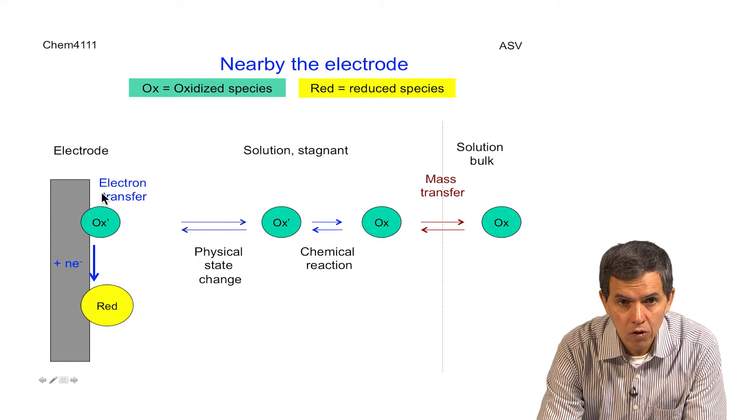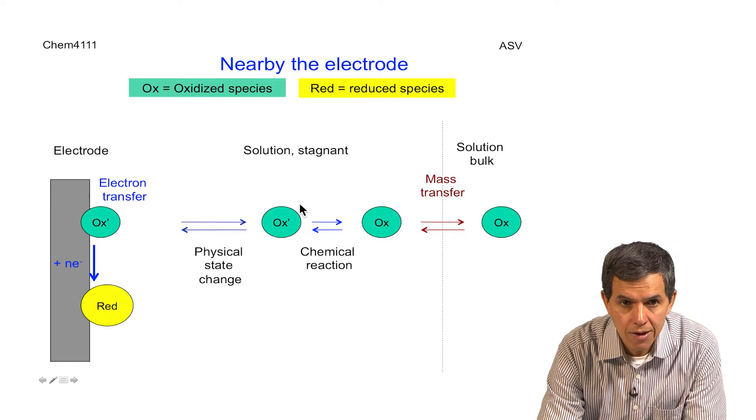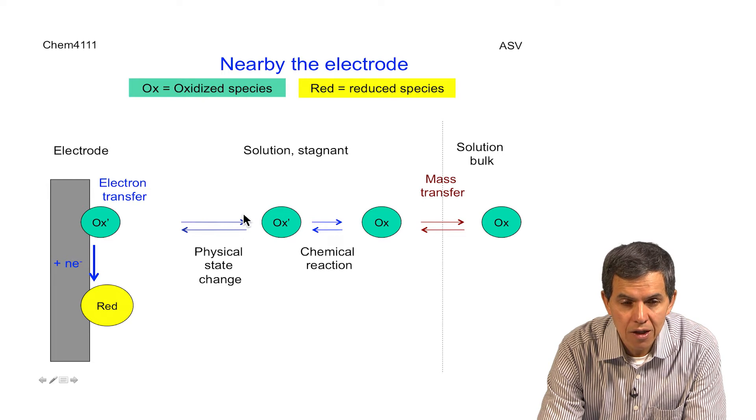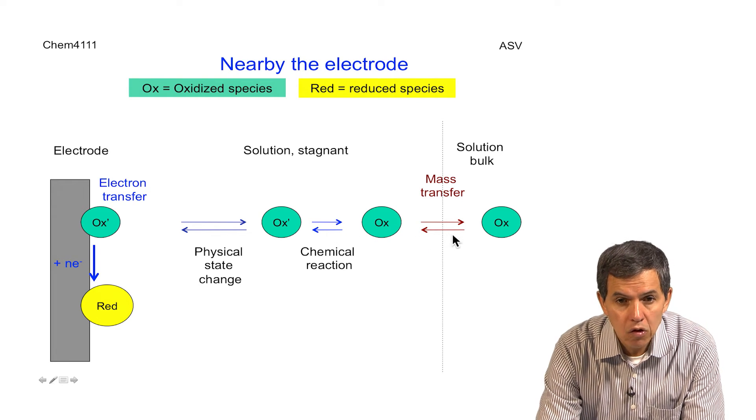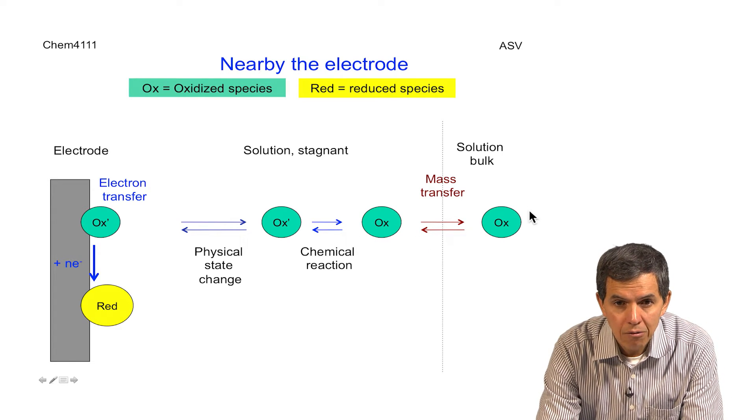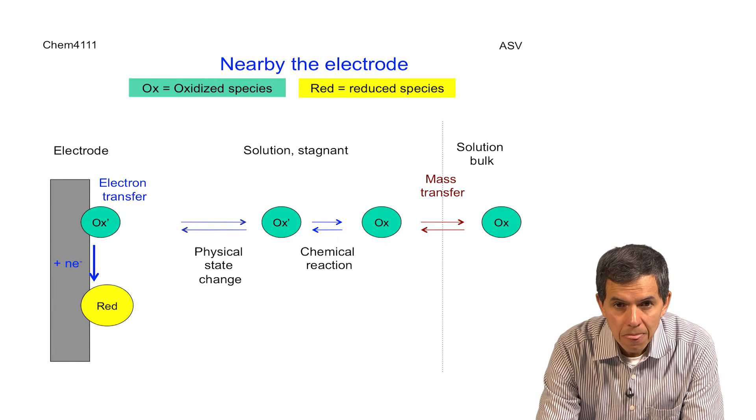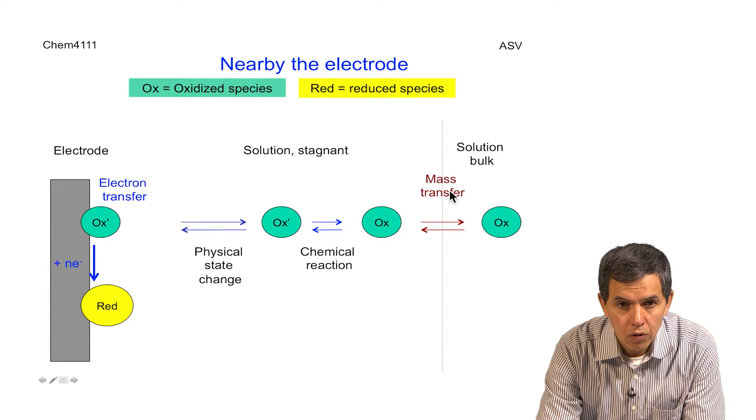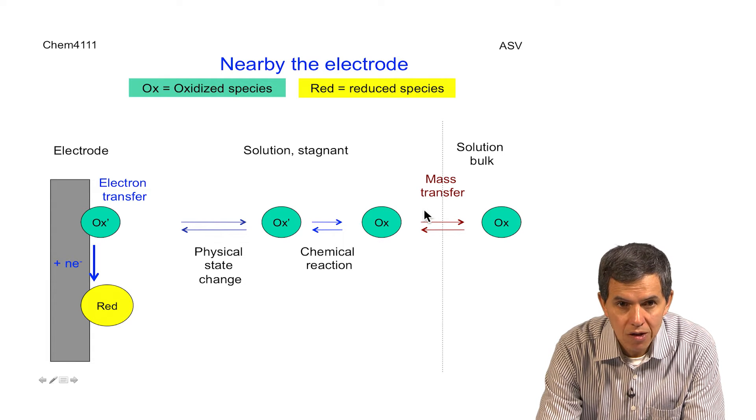In addition to that, close to the electrode, there is a layer of solution which doesn't really move—it's stagnant, and in that particular region, there may be some other chemical and physical changes to the oxidized species. And far away from the surface of the electrode, there is the bulk solution in which the reservoir of all the oxidized species stay and remain. Theoretically, the transfer from the bulk solution closer to the stagnant layer to the electrode is done through the process of mass transfer.